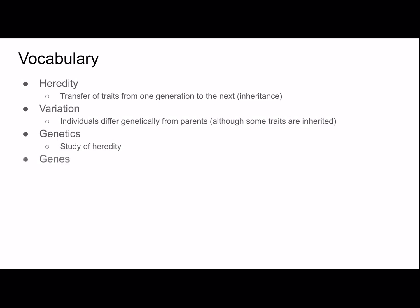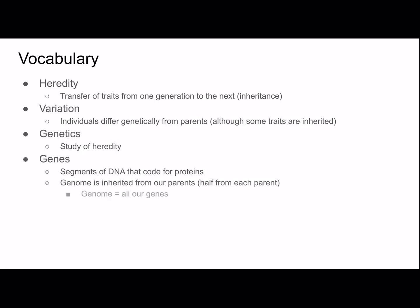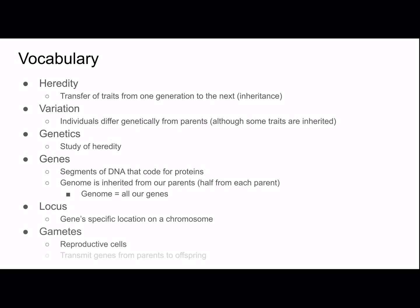Genes are segments of DNA that code for proteins. Our genome is inherited from our parents — half from each parent — and the genome is a collection of all our genes. A gene's locus is the gene's specific location on a chromosome. Gametes are reproductive cells that transmit genes from parents to offspring.